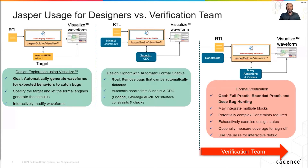We can extend this design exploration with automatic formal checks. The goal is to remove bugs that can be automatically detected. For example, Jasper Superlint can automatically generate formal properties that can show you how your counter can overflow or can reveal dead code in your RTL. Another example is Jasper CDC, which can structurally analyze your RTL for CDC and RDC issues and formally verify that your custom CDC synchronizer has no protocol violations.